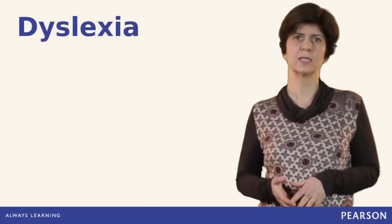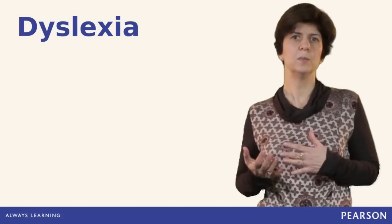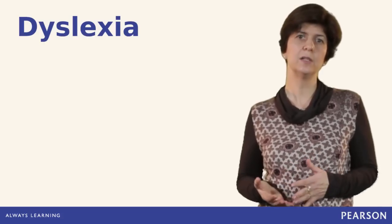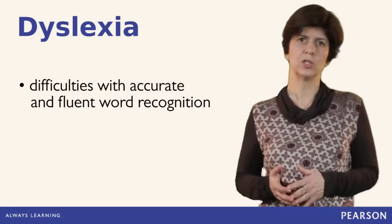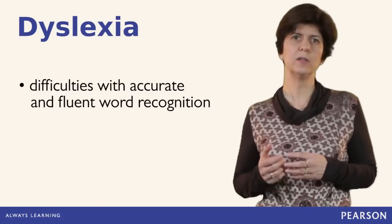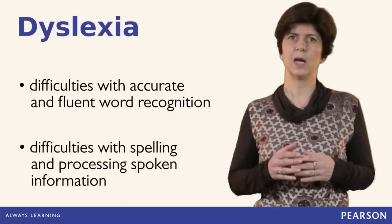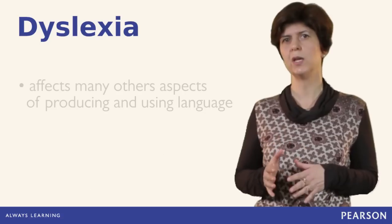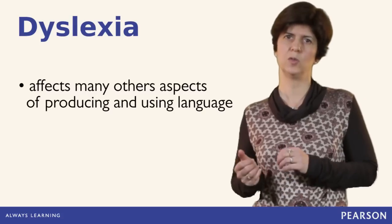This metaphor of invisible hurdles is very useful to help us understand the effect of dyslexia on learning another language. So what is dyslexia and what are the hurdles these students need to jump over? The origin of the term dyslexia suggests it is a difficulty associated with reading. Most definitions describe dyslexia as a difficulty with accurate and fluent word recognition. These definitions also add that dyslexia can cause difficulties with spelling and processing spoken information. Therefore, dyslexia is not just a difficulty in reading, but it also has an effect on other aspects of producing and using language.